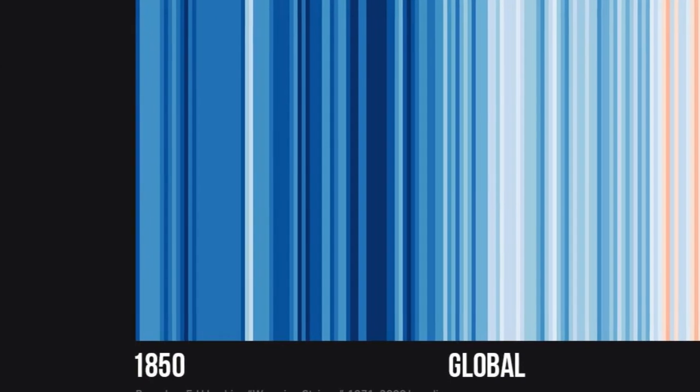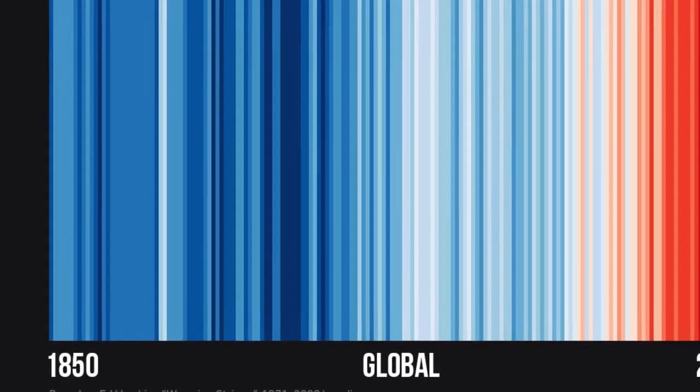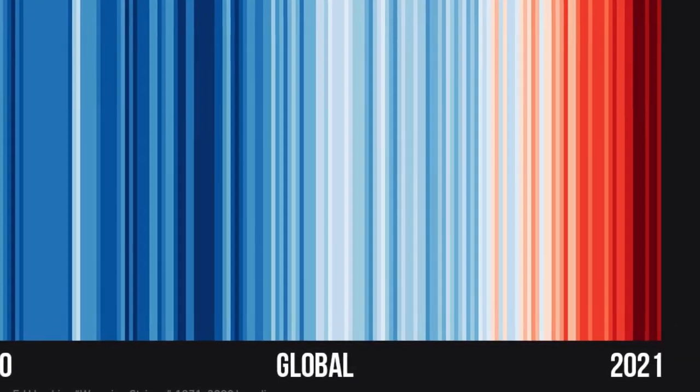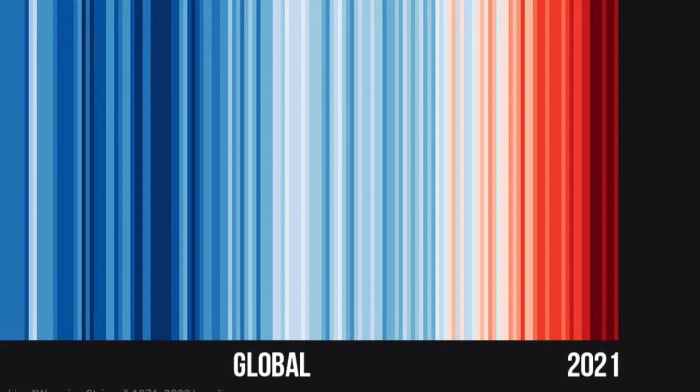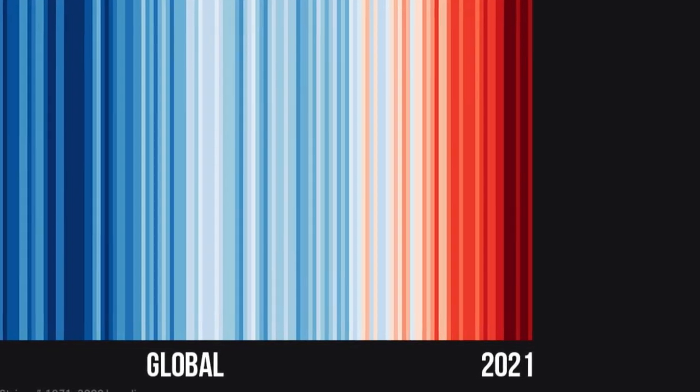What you can see is those colors change from blues — especially very rapidly — they've changed to reds in the last 30 or 40 years as our planet has warmed up.